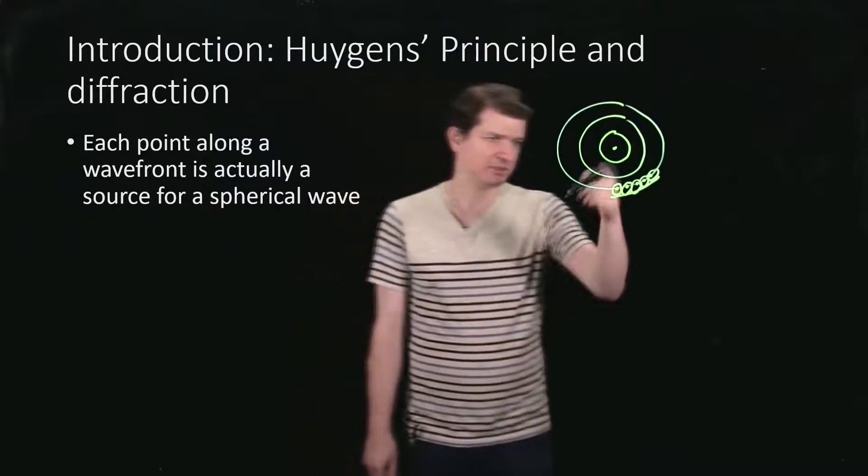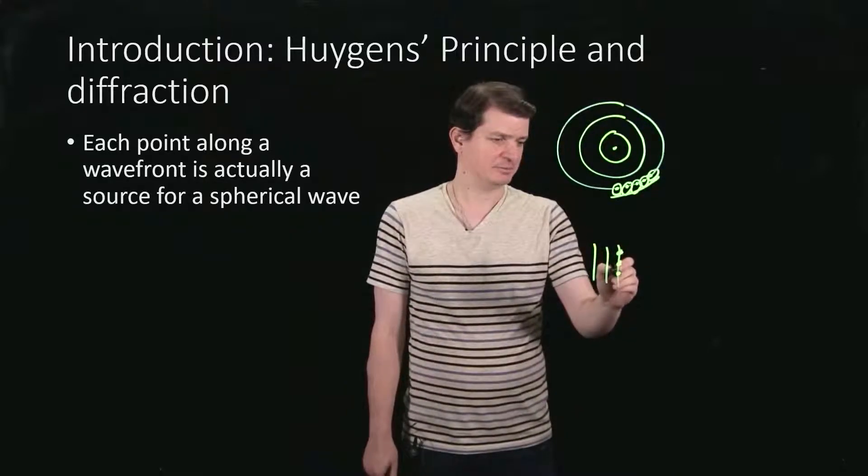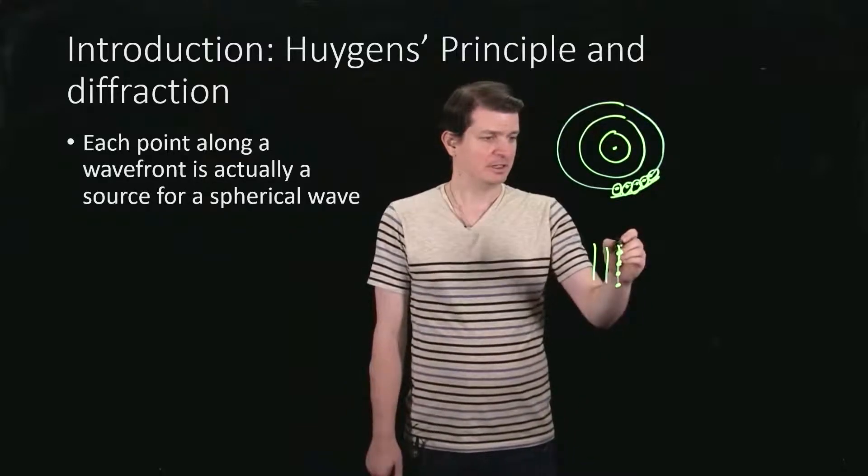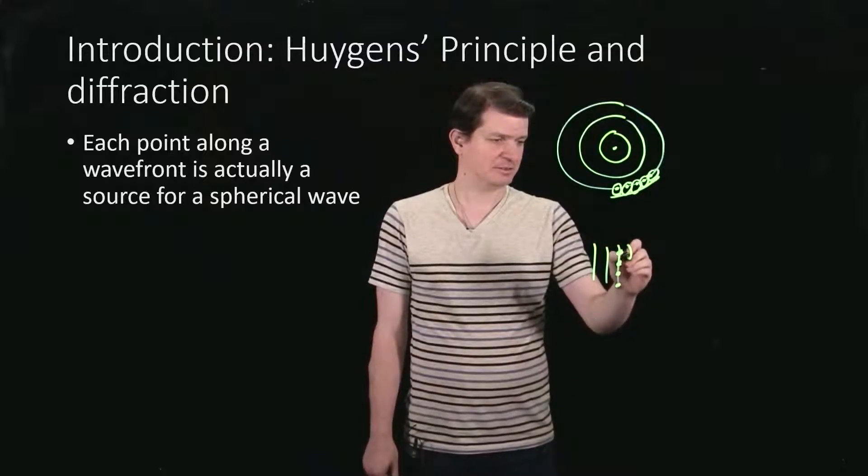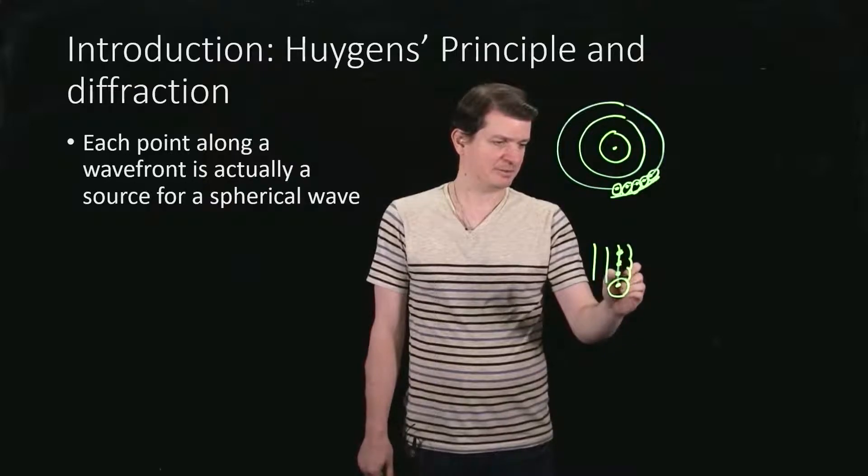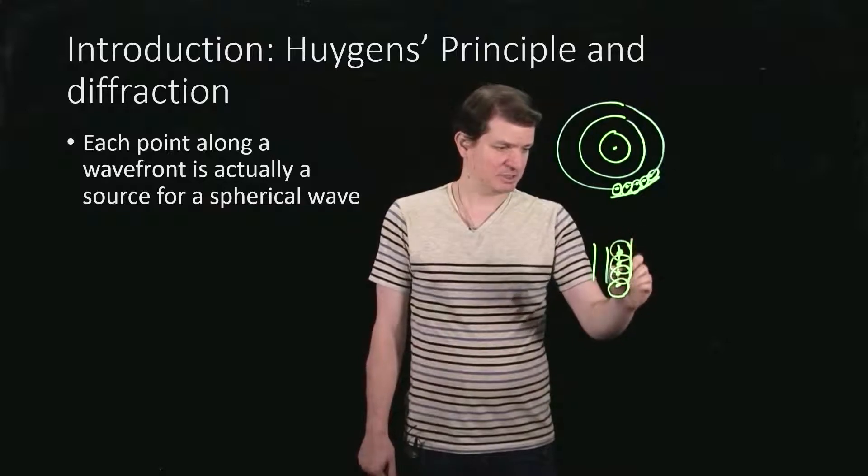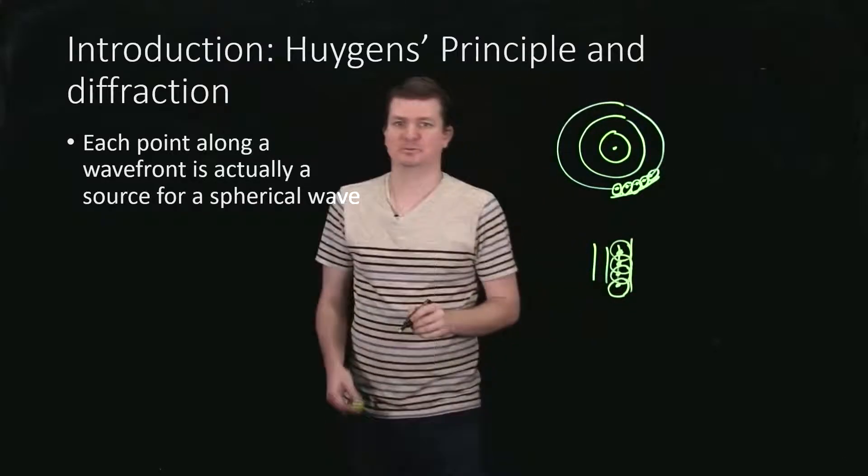And that works whether you're talking about circular waves or even plane waves. If I just take a couple of little dots along here, and I imagine emitting circular waves from all of those, well, it would go around like that, right? So the superposition of them just gives me that next wave front.